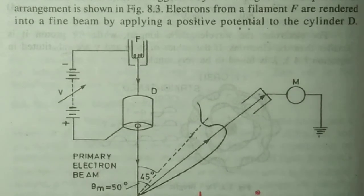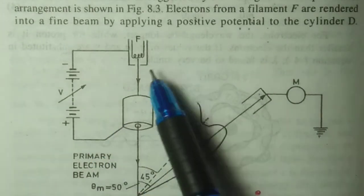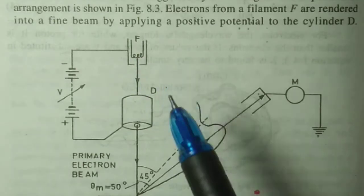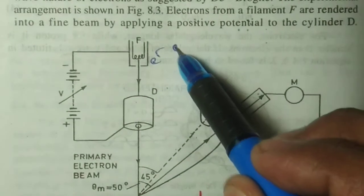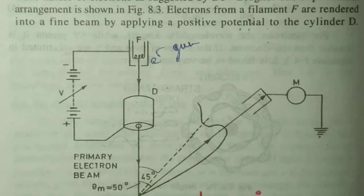Electrons from a filament F - this is a filament F, also known as an electron gun because it produces the electrons.